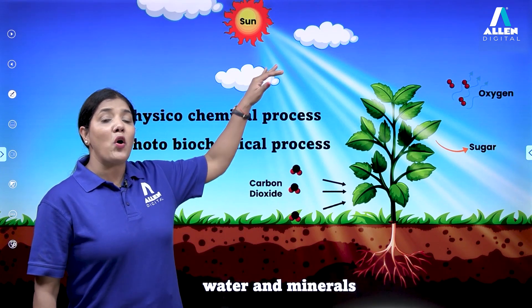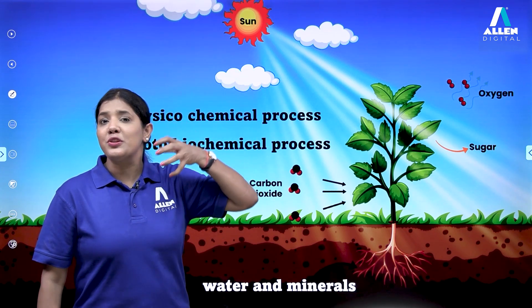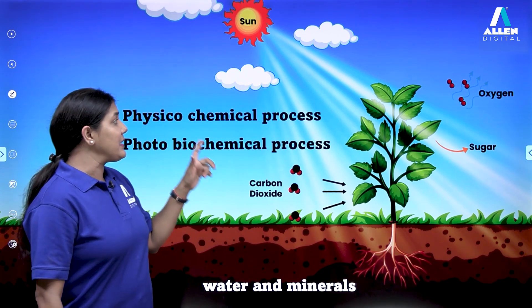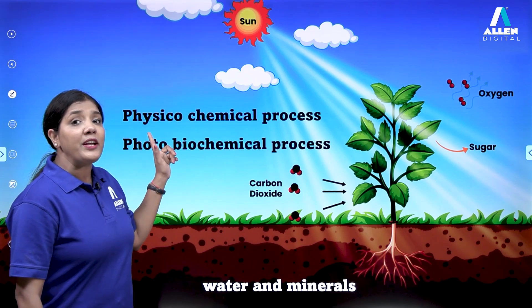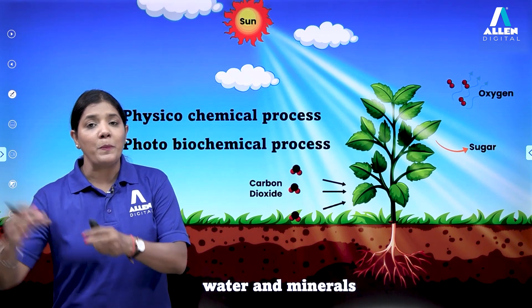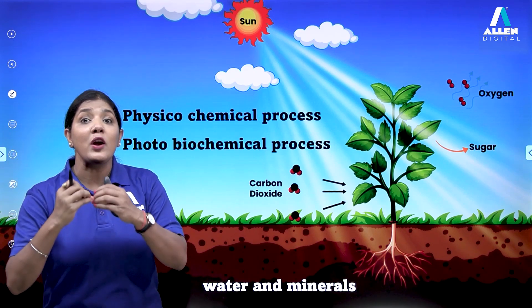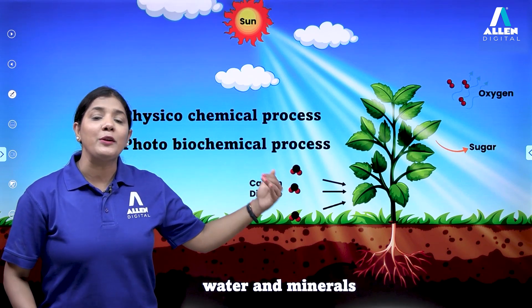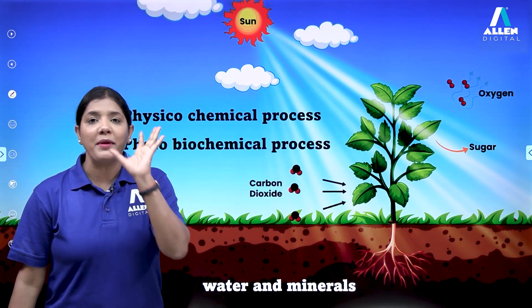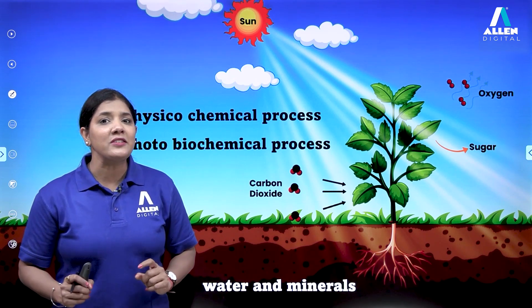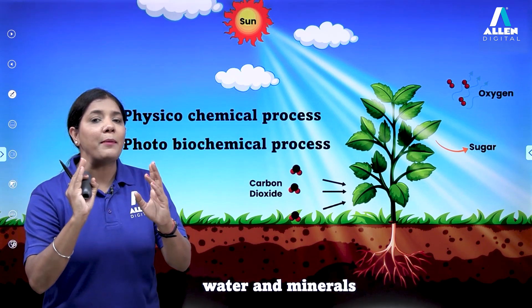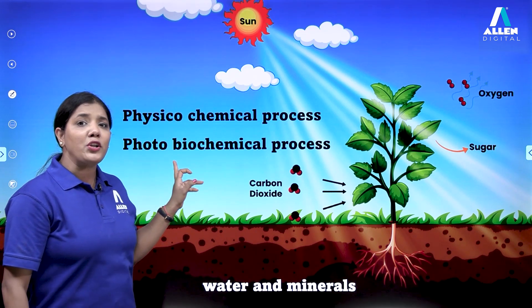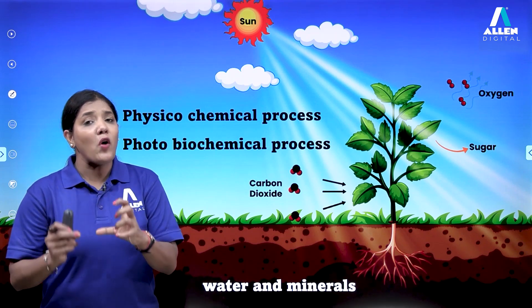Photosynthesis is also called a physico-chemical process. 'Physical' refers to the entrapment of light energy — the physical form — which is then converted into chemical form via a chemical process. That is why it is called a physico-chemical process.